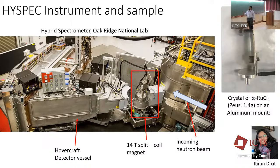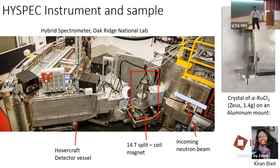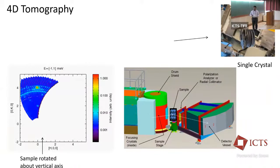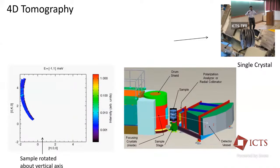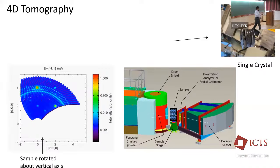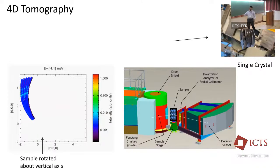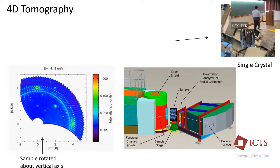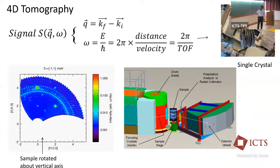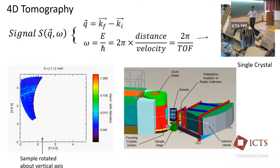The crystals we are measuring are alpha-ruthenium trichloride — the black crystal is 1.4 grams. We have to strongly mount it in an aluminum mount because if you don't, when you apply a field the crystal flies away. The detector is two-dimensional, giving 2D data. To get the third dimension — H, K, and L — we progressively rotate the crystal and stitch together all the data into a big 3D dataset with full three-dimensional and time-of-flight information. How long the neutron takes to travel from sample to detector tells you how fast it is going.